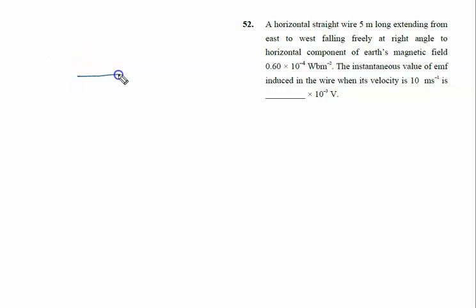A horizontal straight wire 5 meters long, extending from east to west, is falling freely at right angle to the horizontal component of the magnetic field. It will cut the horizontal component of the magnetic field.